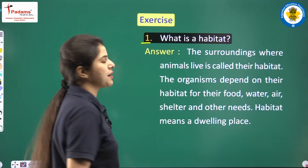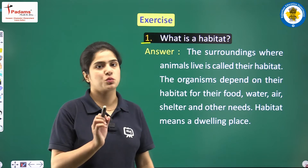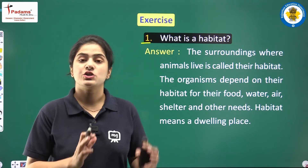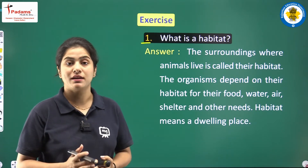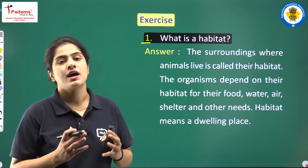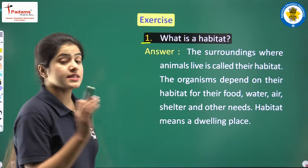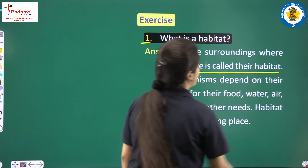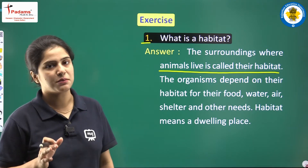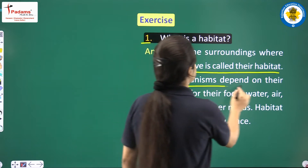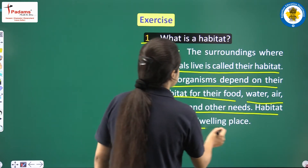The first question is: what is a habitat? A habitat is a dwelling place where any animal or any plant is surviving in a particular place with adaptation, and in that particular dwelling place they nourish. The surroundings where animals live is called their habitat. The organisms depend on their habitat for their food, water, air, shelter and other needs. Habitat means a dwelling place.